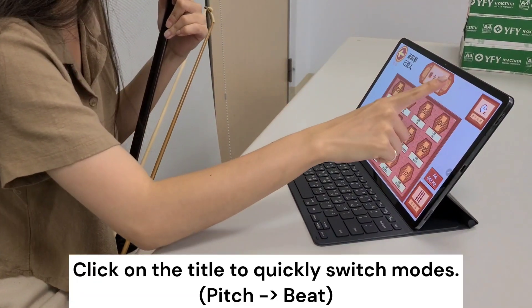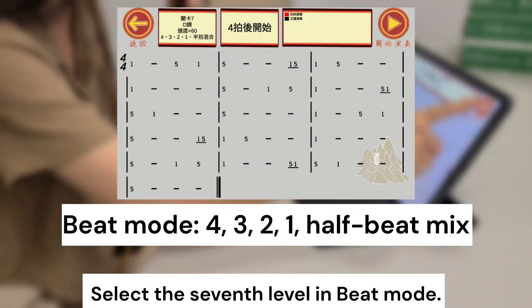Click on the title to quickly switch modes. Select the seventh level in pitch mode.